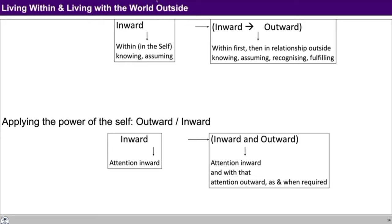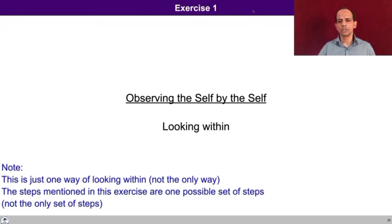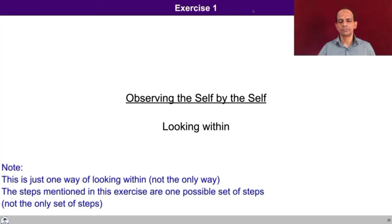In these exercises, we will start looking inward, looking within oneself. Most of the time we are used to paying attention outward, and then we cannot understand things because the knower — the seer — itself is not clear about oneself. When we say observing the self by the self, I am the seer and I am the seen. I am the object of attention and I am the one who is going to pay attention. This is one proposal — one possible set of steps — and not the only way, but we have experimented with this and it has worked out quite well.